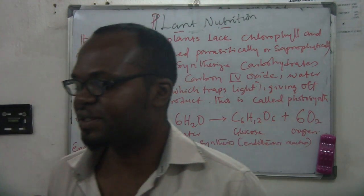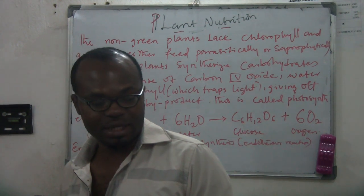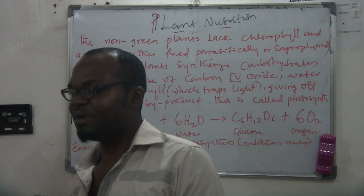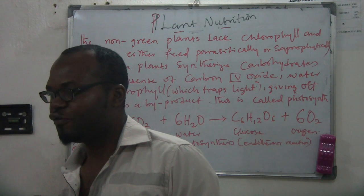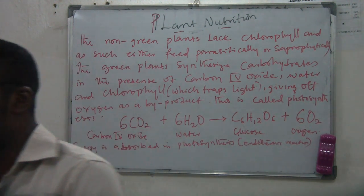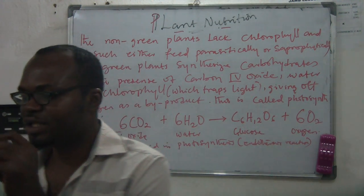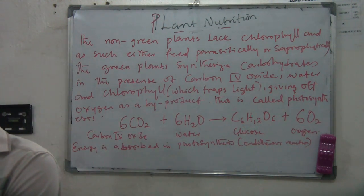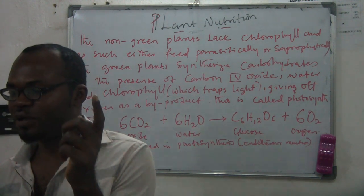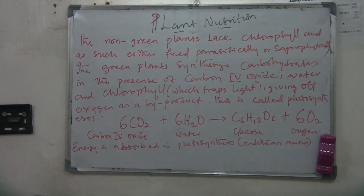Photosynthesis is a process where green plants manufacture their own food by synthesizing carbohydrates in the presence of carbon dioxide, water, and chlorophyll, and giving off oxygen as a byproduct.